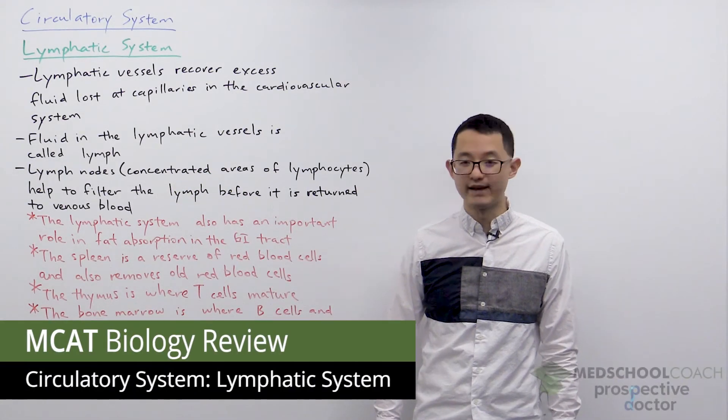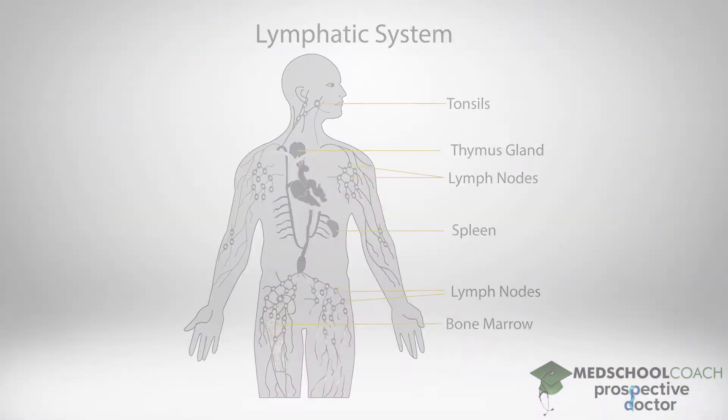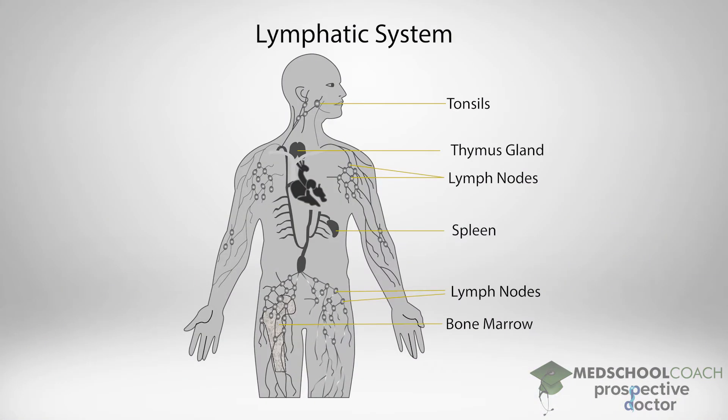In this video we're going to go over the lymphatic system. In this diagram you can see the different components of the lymphatic system, and you can first appreciate that the lymphatic system covers the entire body with its lymphatic vessels. This also includes the spleen, the thymus, and the bone marrow, which we'll discuss.